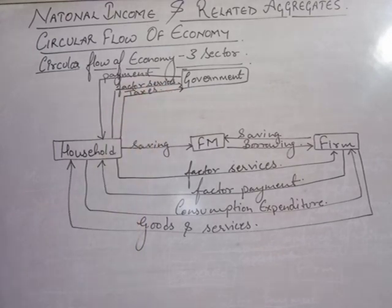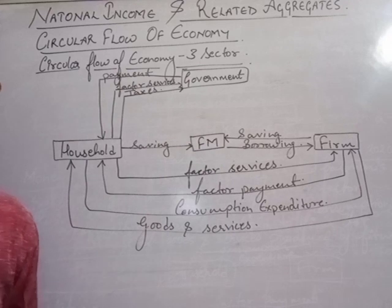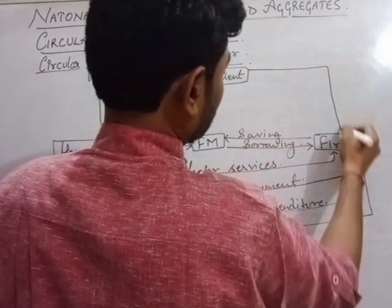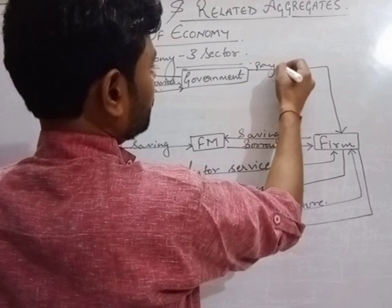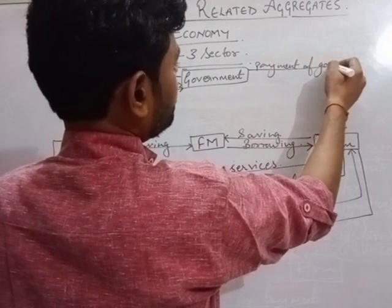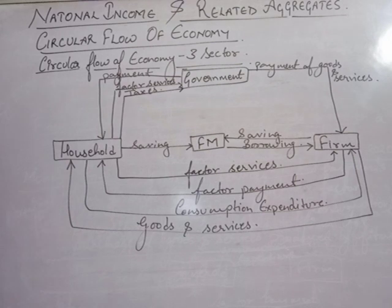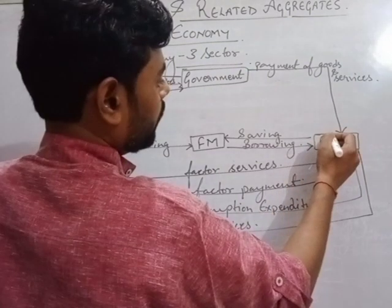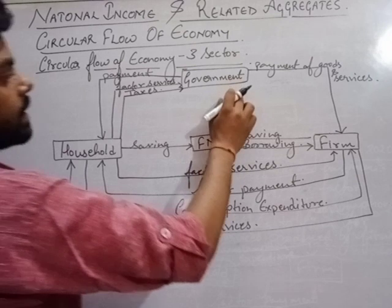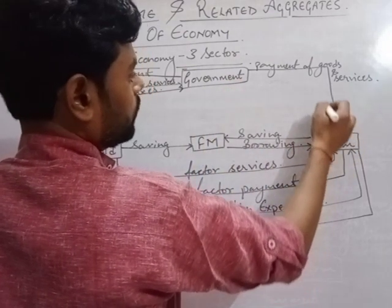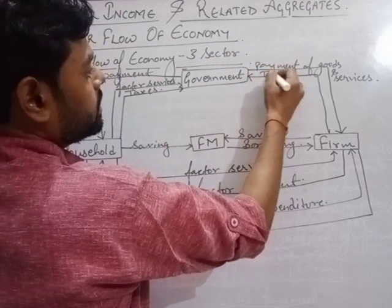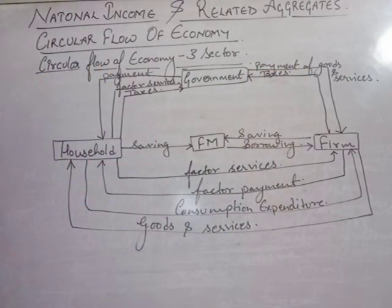Now talking about what the firms are doing: the firm provides goods and services to the government. In return, the government makes payment for those goods and services to the firm. The firm also pays taxes to the government.